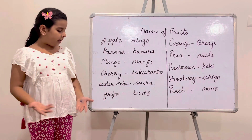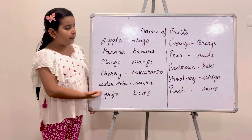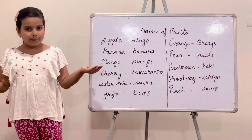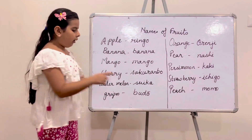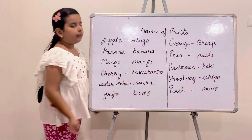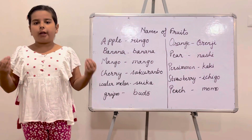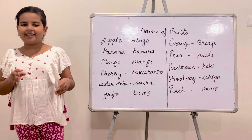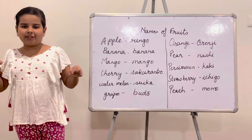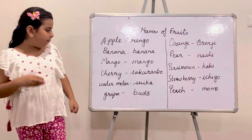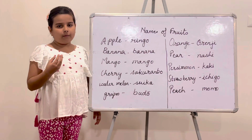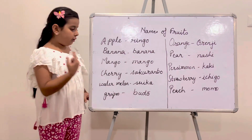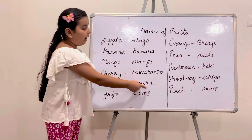The next fruit is Grapes. Grapes is known as Budō. You would think: what is this bar above the O? Because O has a long sound, we need to put this bar above O.